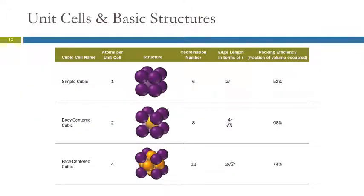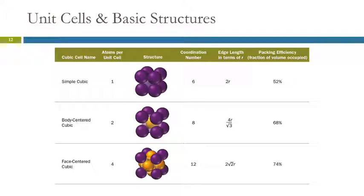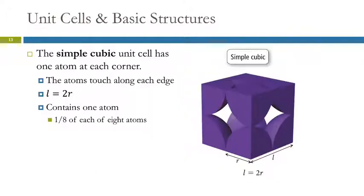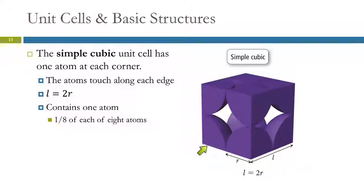There are three cubic cells: simple cubic, body-centered cubic, and face-centered cubic. The coordination numbers are 6, 8, and 12, and the packing efficiencies increase as the coordination numbers increase. The first is the simple cubic unit cell — we have one atom at each corner of the cube. The atoms touch on their edges, so the length of each side L is one radius plus another radius, meaning L equals 2R.